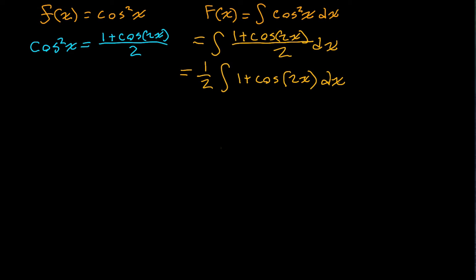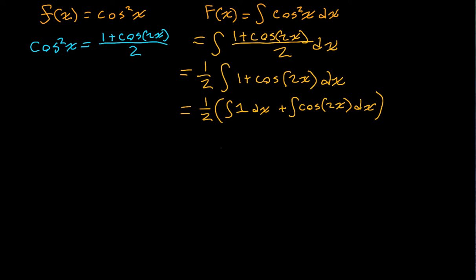Now we can break this down into two separate antiderivatives or indefinite integrals. That's going to be 1 half times the integral of 1 with respect to x, plus the integral of the cosine of 2x with respect to x. We know the integral of 1 with respect to x — we're going to add constants at the end, so don't worry about that for now — that is just going to be x.